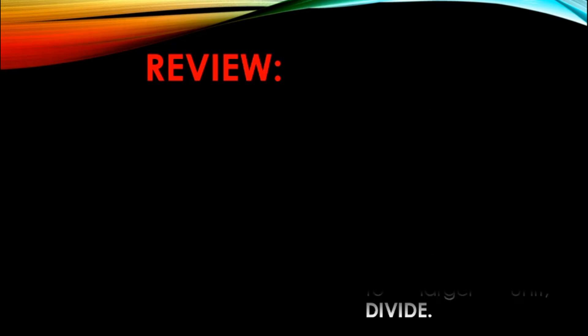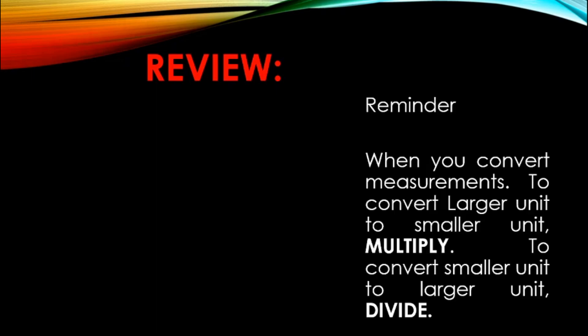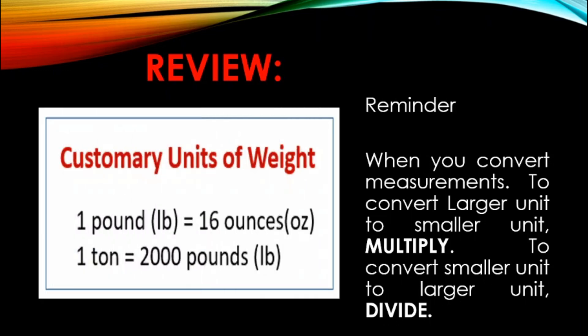Review time: always remember, when you convert larger unit to smaller unit, multiply. When you convert smaller unit to larger unit, divide. These are the customary units of weight that you need to familiarize: 1 pound equals 16 ounces, 1 ton equals 2,000 pounds. All customary units of weight on the left side, the first column, are considered the larger unit compared to each pair on the right side, the second column, which are considered the smaller unit.